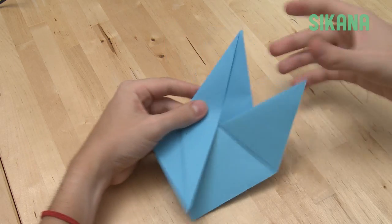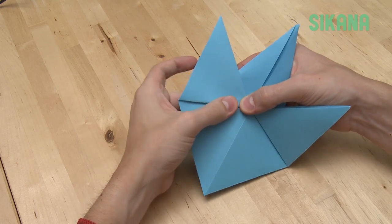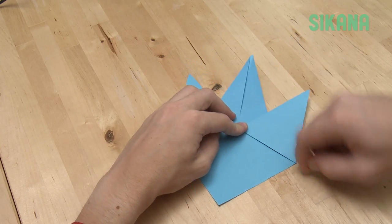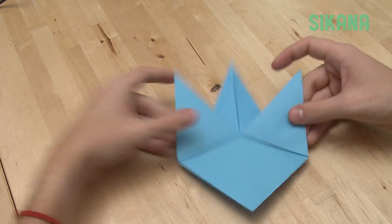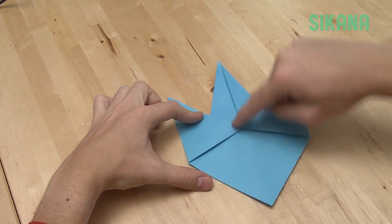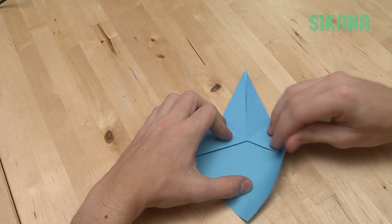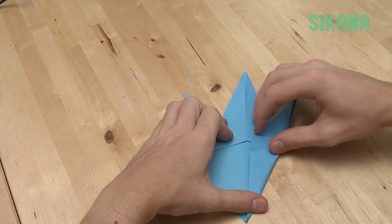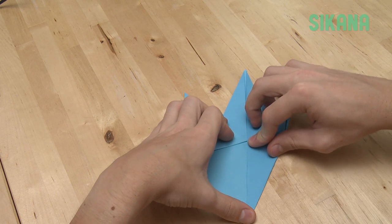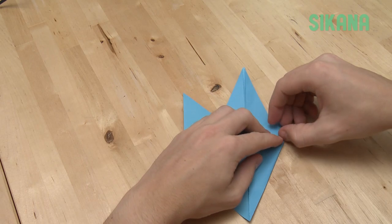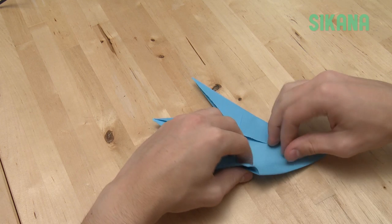Repeat for the other side. Now fold this part onto the center line. Repeat for the other side.